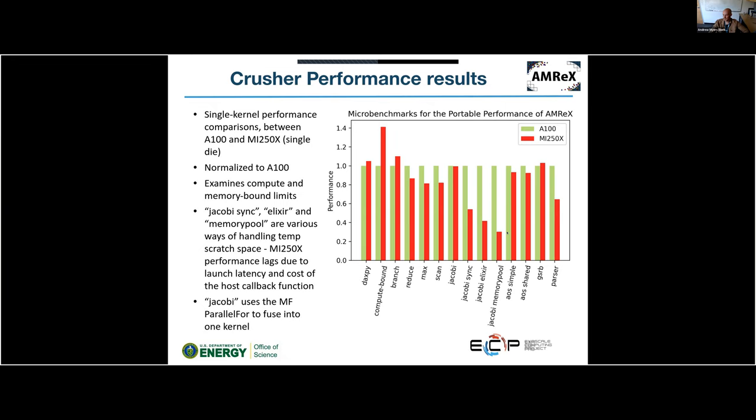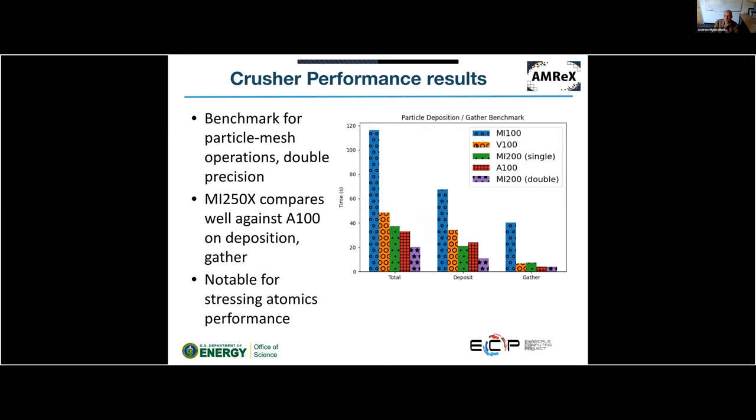The plain Jacobi variant uses the multi-fab-level parallel_for operation to fuse everything into one internal launch. In that case, we get about the same performance between the MI250X and A100. This demonstrates the value of the new fused multi-fab parallel_for.